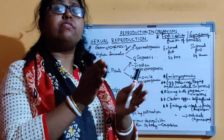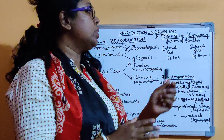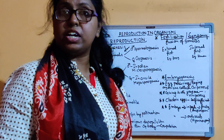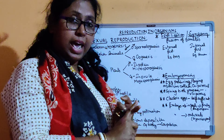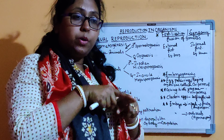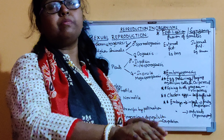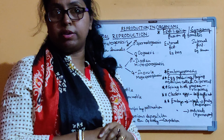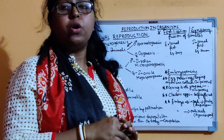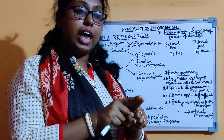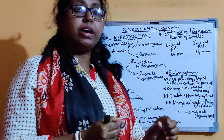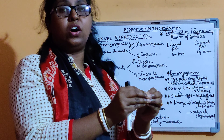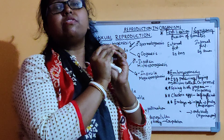Sometimes some living organisms show external fertilization. What is the meaning of external fertilization? The male body produces sperm in the water medium and the female body also releases the egg in the water medium. After that the male gamete and female gamete fuse in the water medium. This is called external fertilization.